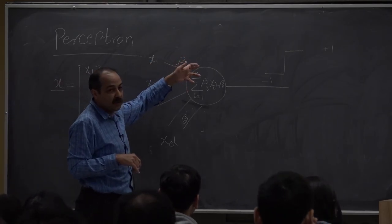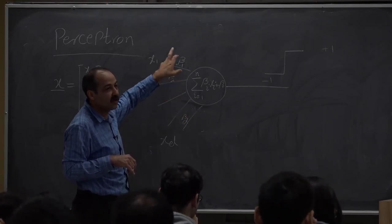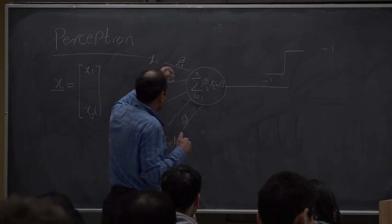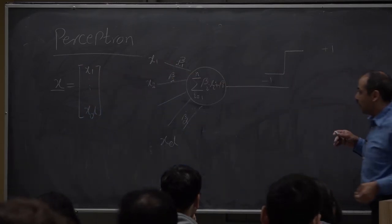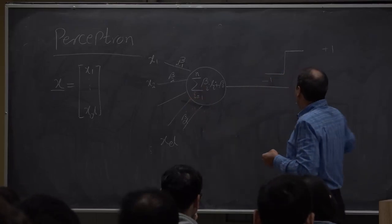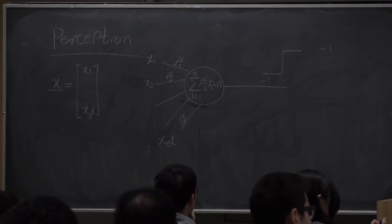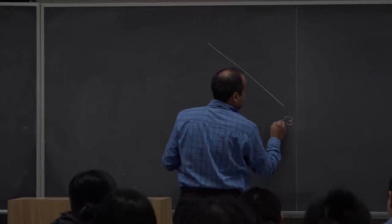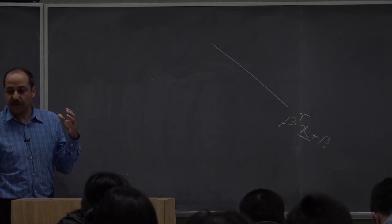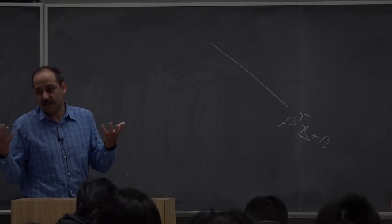At the beginning, people didn't know how to train the perceptron — given a dataset, they didn't know what the optimum set of weights was, so they randomly changed the weights until the solution was acceptable. Now we're going to study one algorithm to find the optimum solution. We know that the perceptron is a linear function of the form beta-transpose-x plus beta-null.